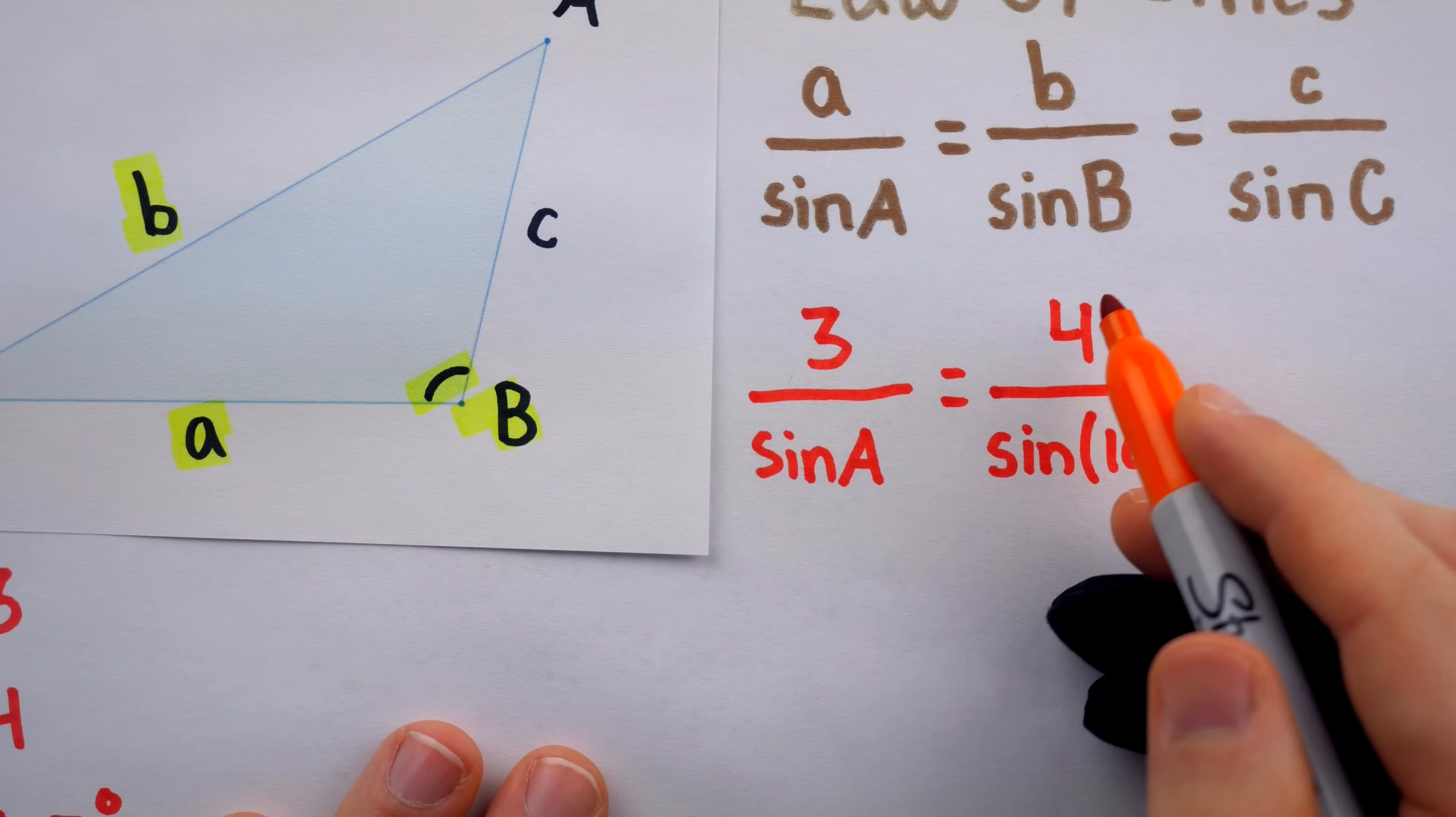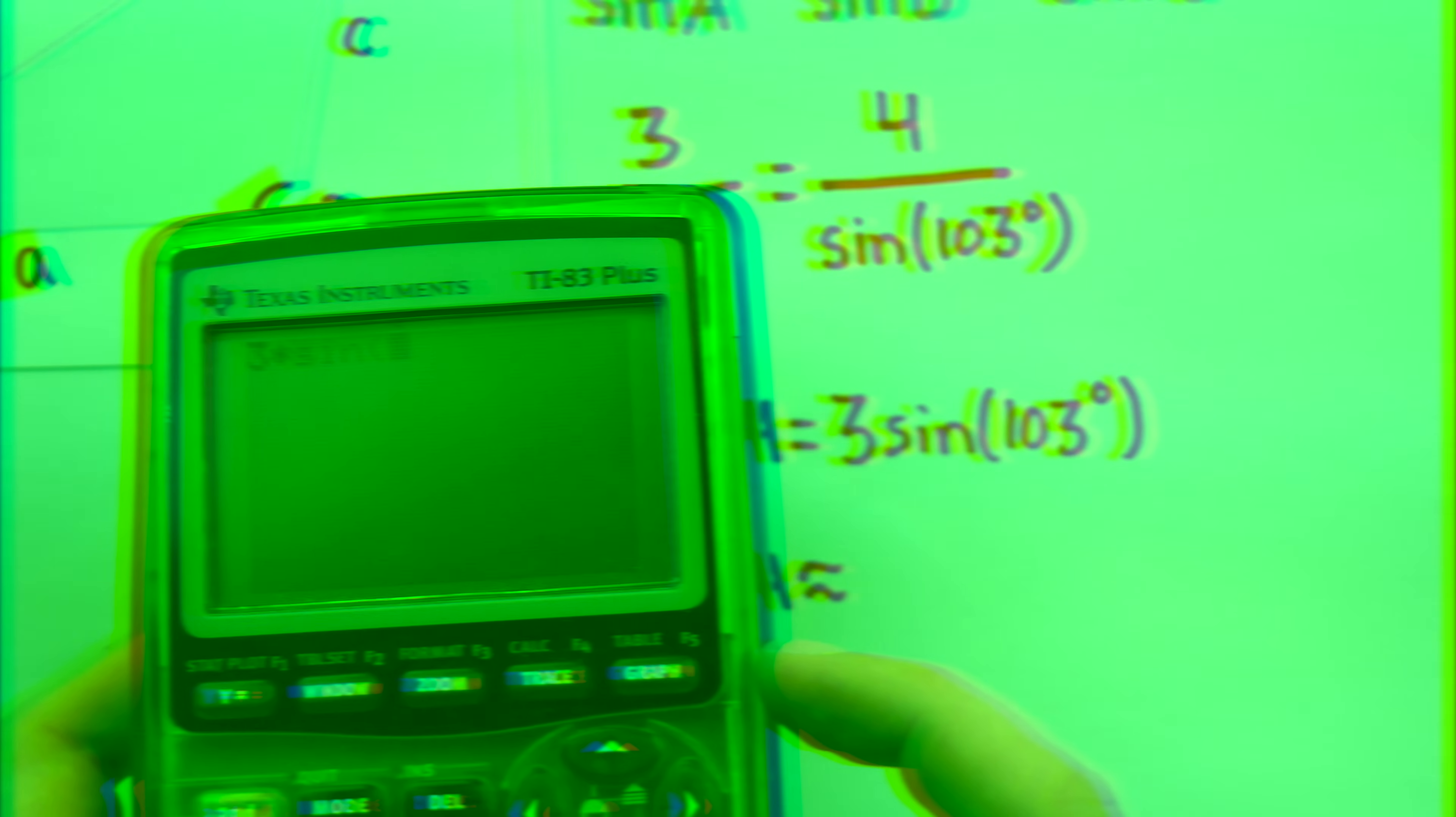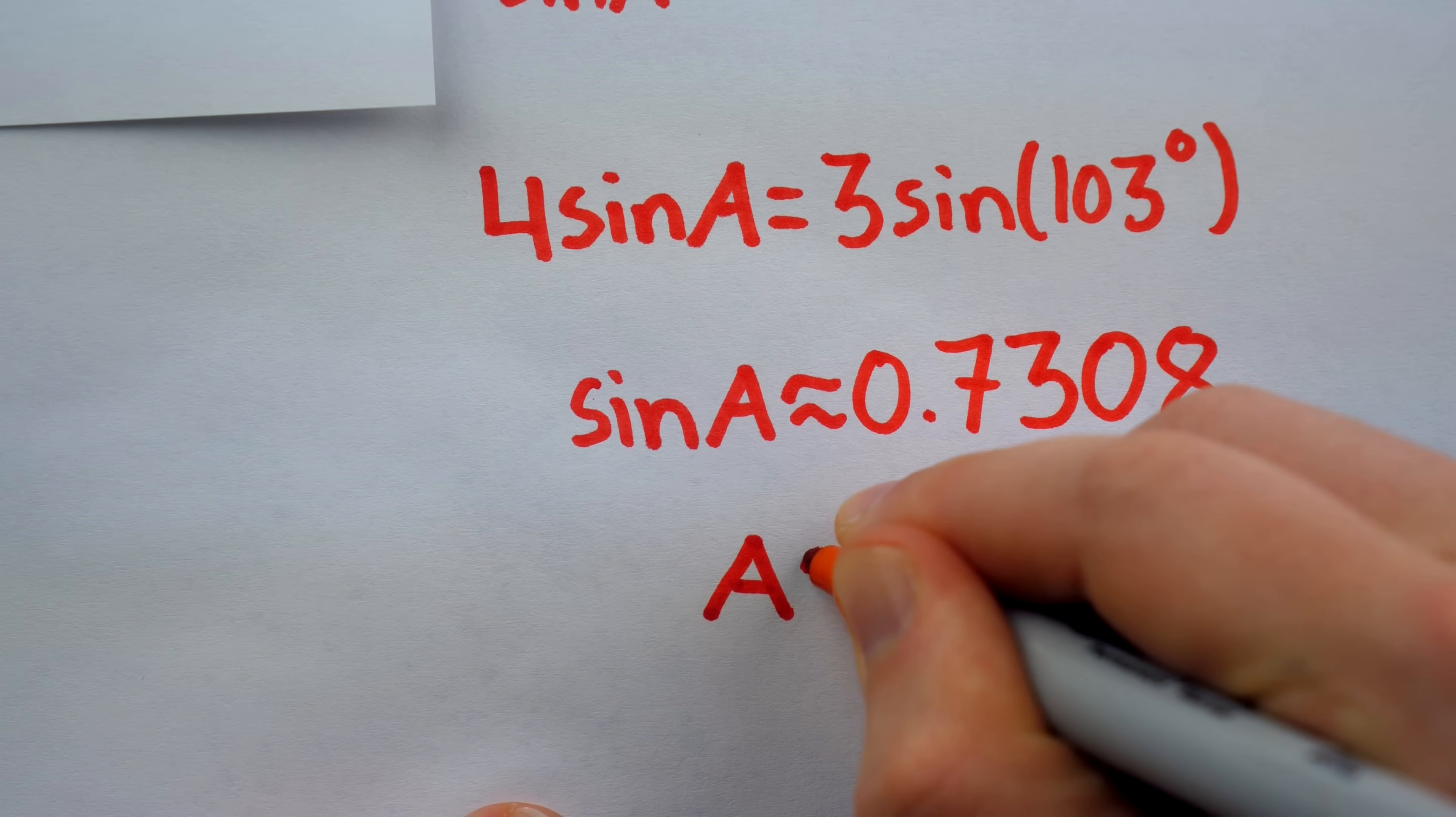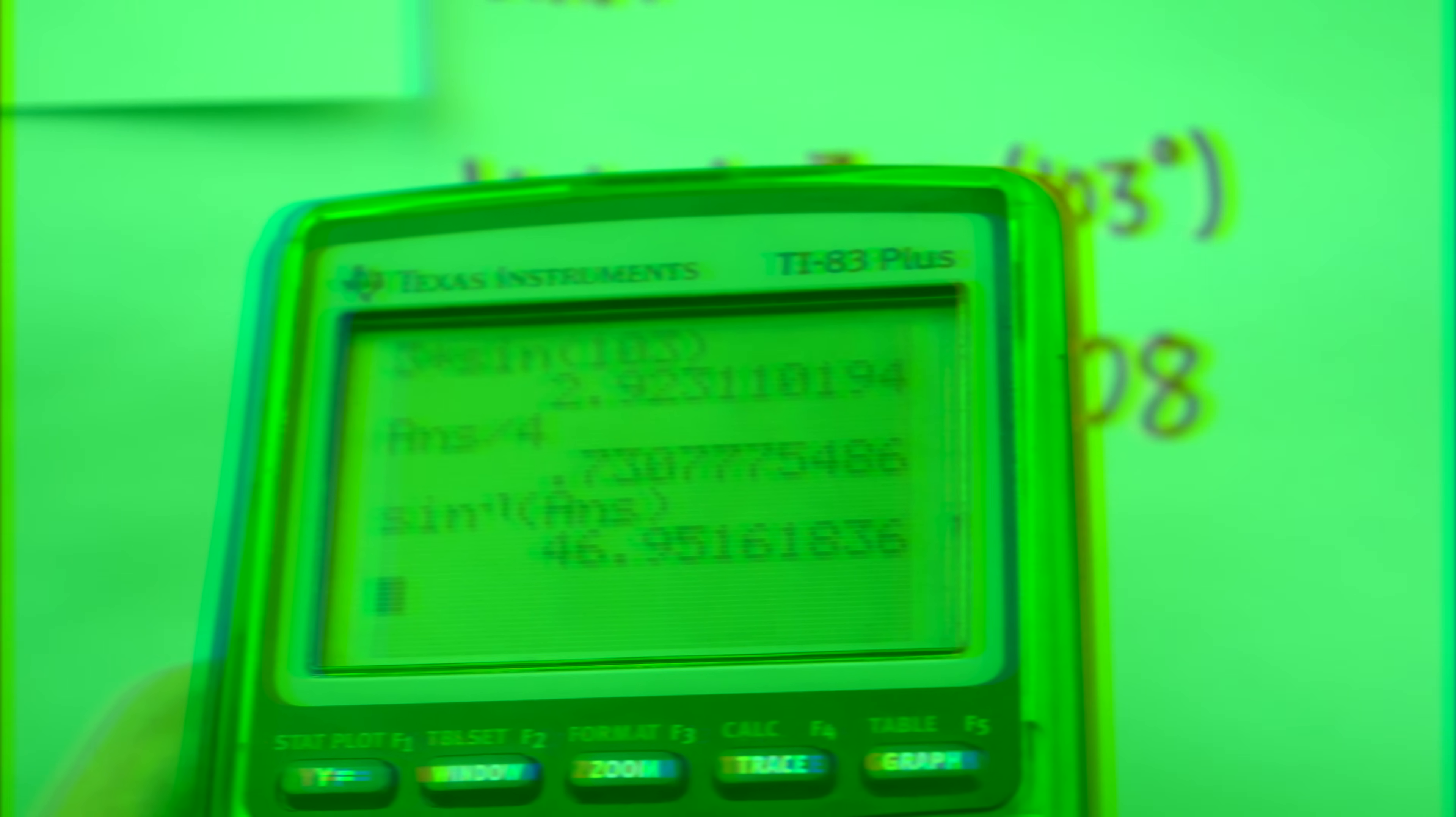When we look at the law of sines, we could take any two of these expressions, which are equal, and note how any two of them will have four total pieces of info. So take any pair where we know three pieces of information, and we can solve for the missing fourth one. In our case, we'll want to take a over sine a, which we know is equal to b over sine b. We know every piece of information there, except for sine a. Thus, we would have 3 divided by sine a, which we don't know, is equal to b, which is 4, over sine of angle b. And of course, we know that angle b is 103 degrees.